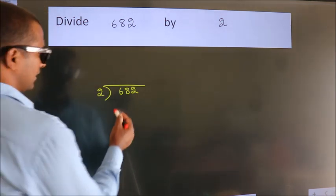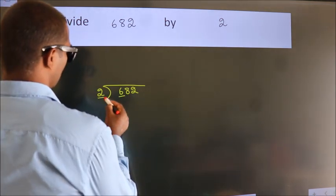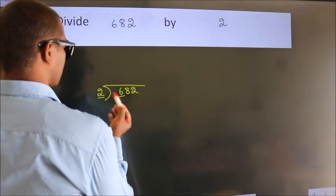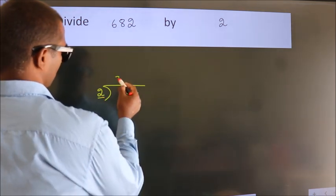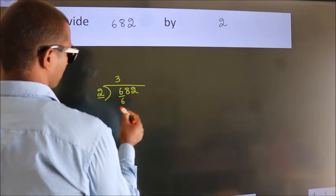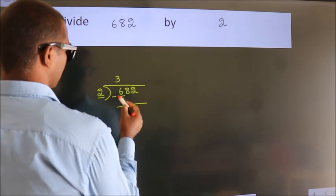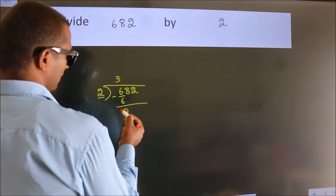Here we have 6, here 2. When do we get 6? In the 2 times table: 2 threes are 6. Now we should subtract. We get 0.